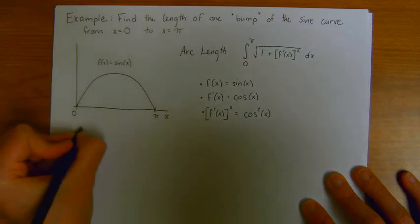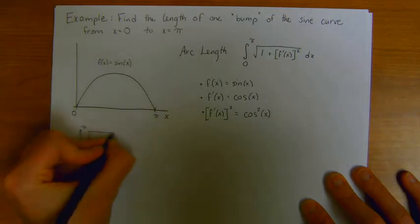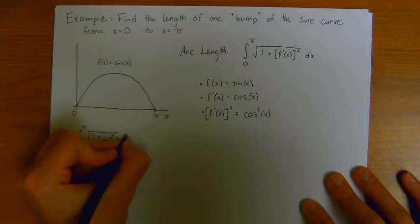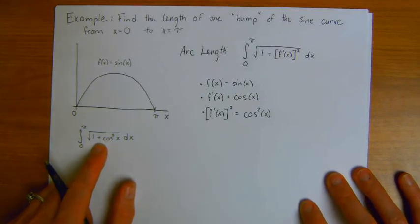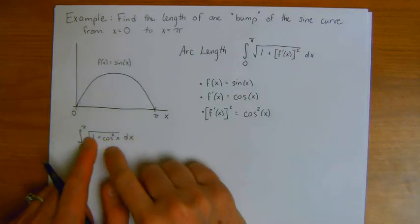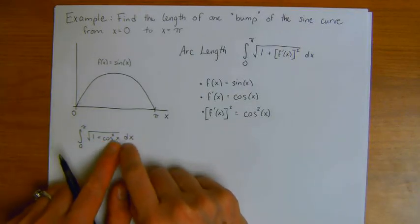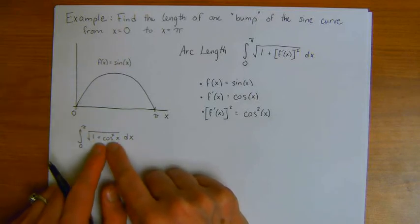So we're ready to compute the integral. This is the integral from 0 to pi of the square root of 1 plus cosine squared x dx. And right off the top of our heads, this looks pretty nice. We know that from trig identities, 1 minus cosine squared is sine squared. But that's not what we have. We have 1 plus cosine squared.